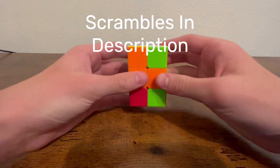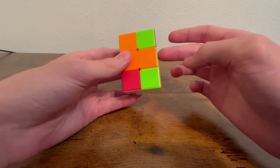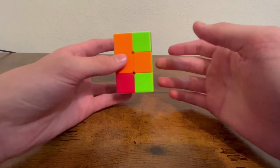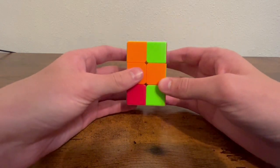So the first step of my method is to preserve this bar, this entire bar around the equator, while you solve the white and yellow faces, similar to the OBL step on square one.